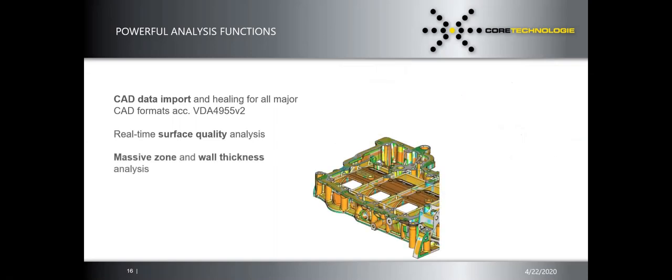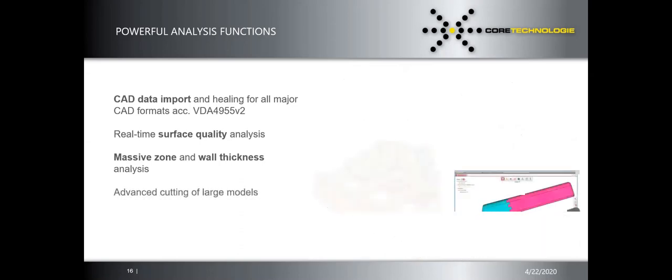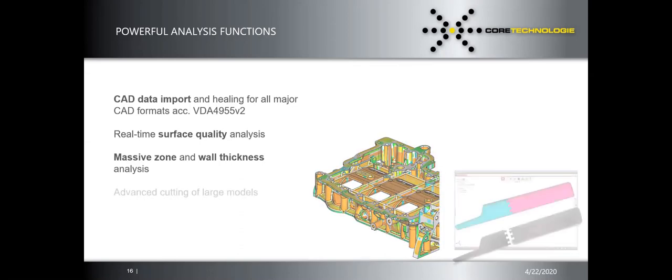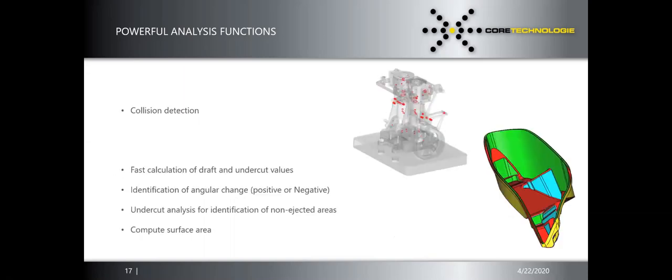Surface quality is another key feature. Also important are mass zones and wall thickness — you may need a certain thickness, or want to change it because you're doing a prototype. With polymers versus production printing, you adjust precision accordingly. Advanced cutting of large models is also available.